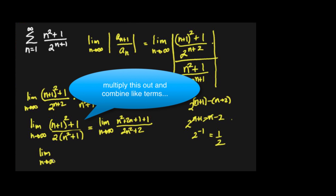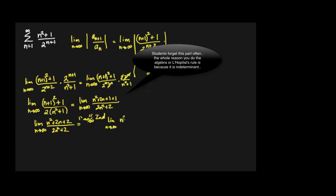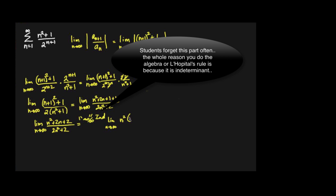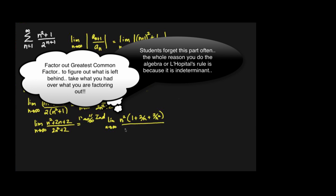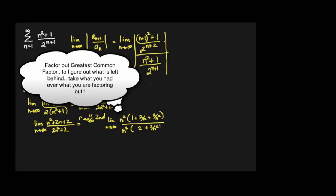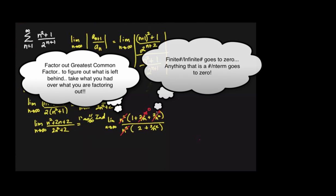That's infinity over infinity, which is indeterminate. So factor out n². When I factor out n² at the top I get 1 + 2/n + 2/n², and on the bottom 2 + 2/n². The terms with a constant over a polynomial go to zero, so it's just one half.